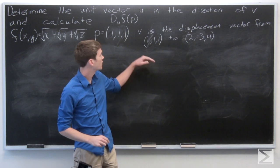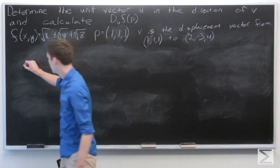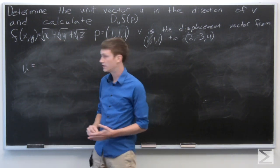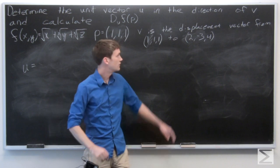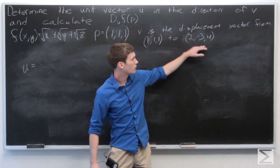OK, so first we want to calculate u in the direction of v. So u is going to be a unit vector, so whatever vector it is, we'll normalize it. And the vector v is from (1,1,1) to (2,-3,4).